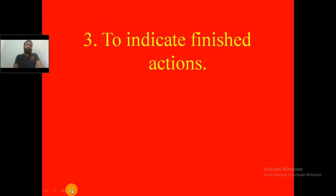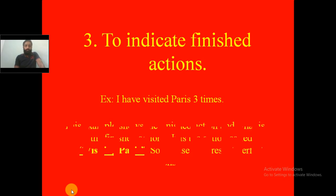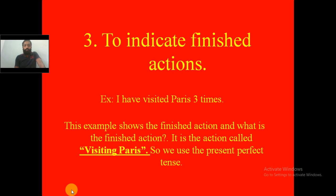The third usage of present perfect tense is to indicate finished actions — actions that are already completed. For example: 'I have visited Paris three times.' This example shows the finished action of visiting Paris, so we use the present perfect tense.